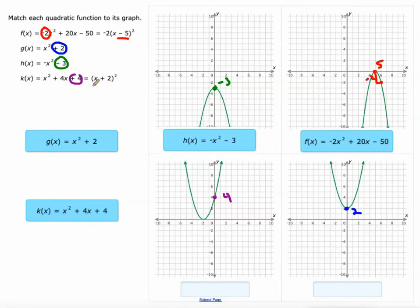You can also see that this one's a perfect square trinomial. So it's got only one x-intercept at negative 2. So all of those things will help us differentiate.